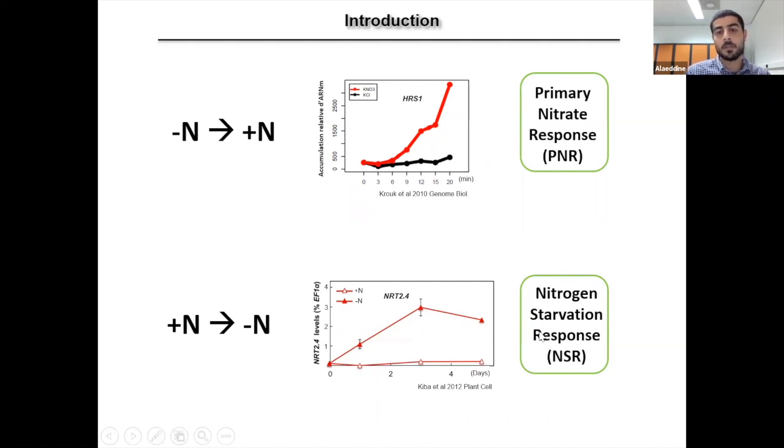And on the other hand, we have the nitrogen starvation response. That takes place when plants are deprived from nitrogen. So at that moment, nitrogen starvation response markers will be induced such as high affinity nitrate transporters. They're expressed in the absence of nitrogen in order to retrieve traces of nitrate in the soil.